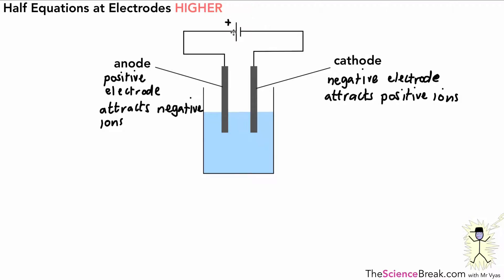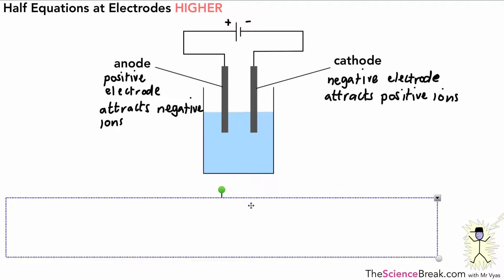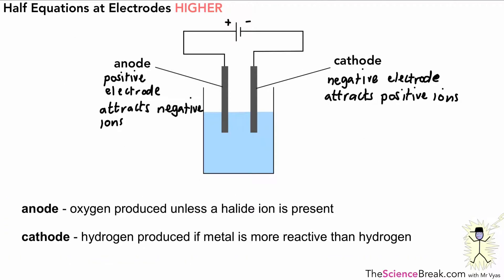We can tell the positive side and the negative side by looking at our cell — the long side is the positive end. We need to remember that at the anode, when doing electrolysis on a solution, oxygen is produced unless there's a halide ion present.